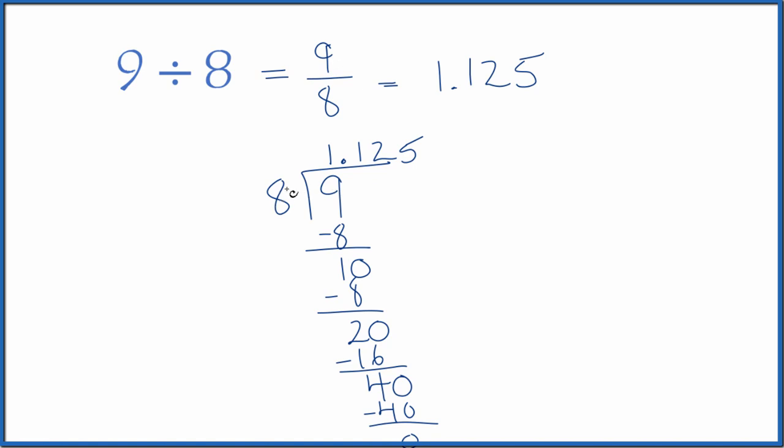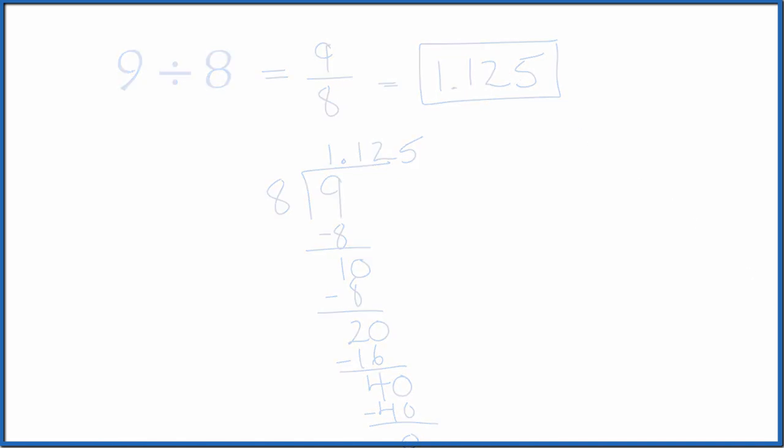So 9 divided by 8, when we do it longhand, is 1.125, which is what we found before. This is Dr. B, dividing 9 by 8. You get the fraction 9 eighths, or the decimal 1.125. Thanks for watching.